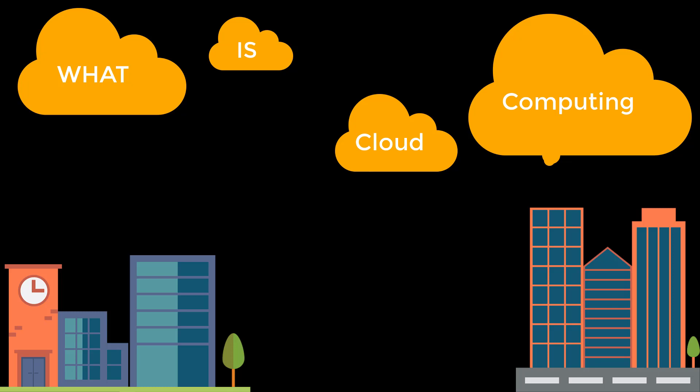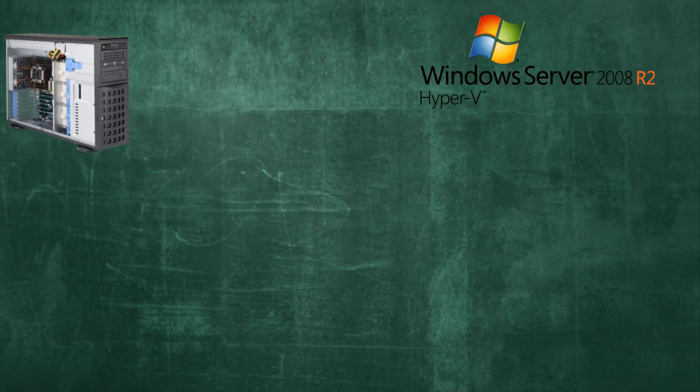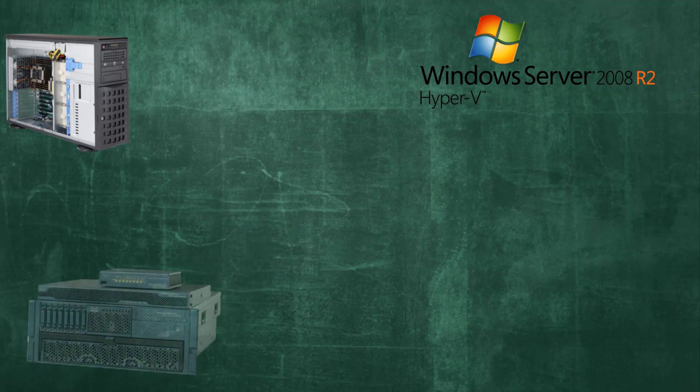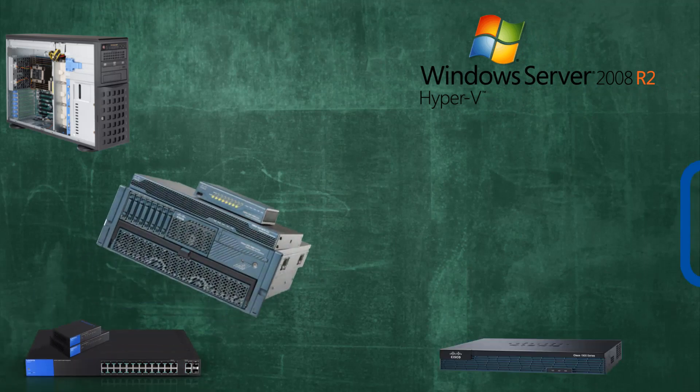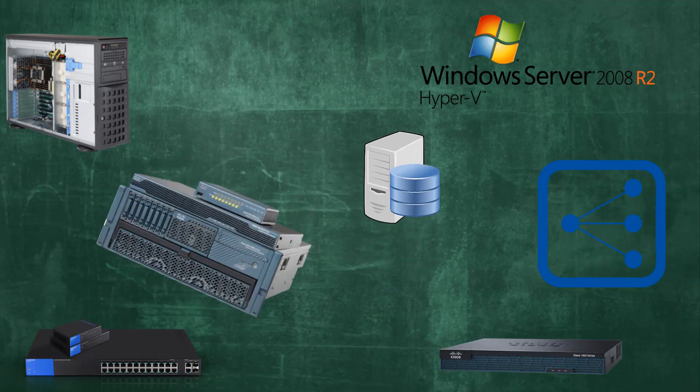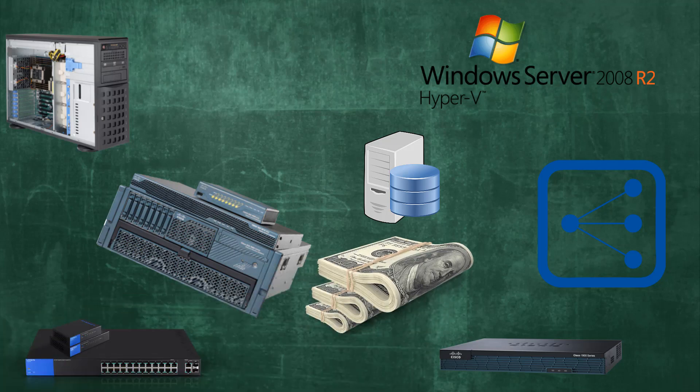Traditionally, if we ever had to build applications, we had to procure a lot of hardware. For example, you would need servers, operating systems and their respective licenses, firewalls, routers, switches, load balancers, databases, and the list just goes endless. And that means you would need a lot of capital expenditure.